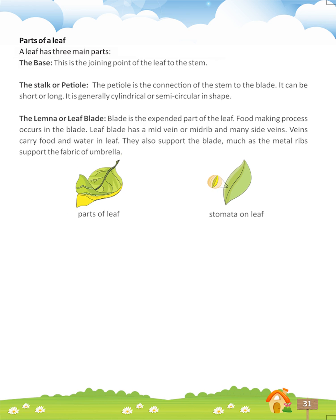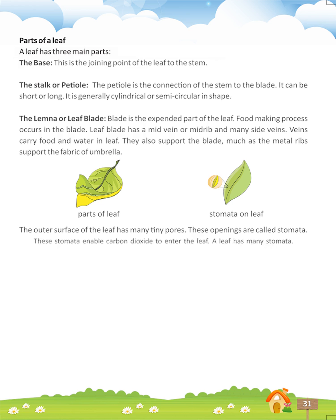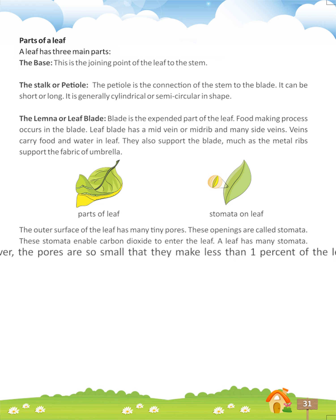Stomata on leaf. The outer surface of the leaf has many tiny pores. These openings are called stomata. These stomata enable carbon dioxide to enter the leaf. A leaf has many stomata; however, the pores are so small that they make less than 1% of the leaf surface.